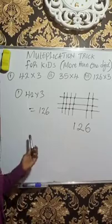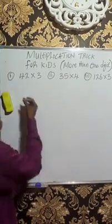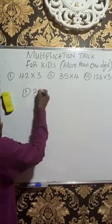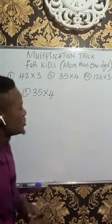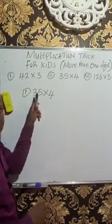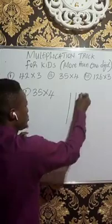This is just the answer. If you have it, it keeps so much. Let's see the second one. In the second question, we have 35 multiplying by 4. So the tens digit here is 3. So you draw 3 vertical lines: 1, 2, 3.